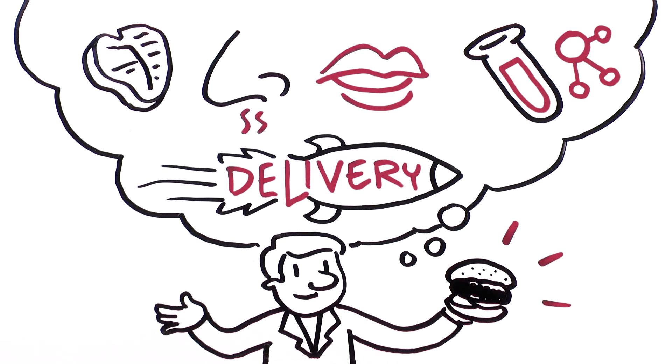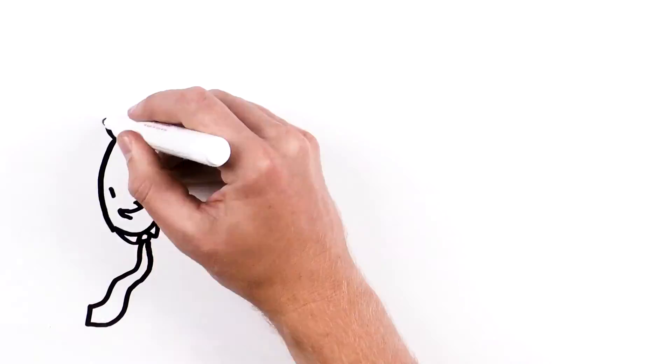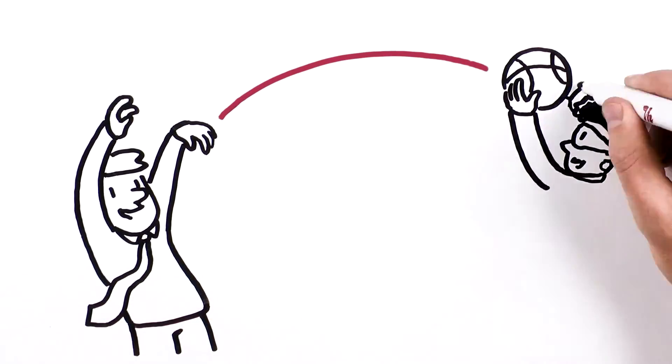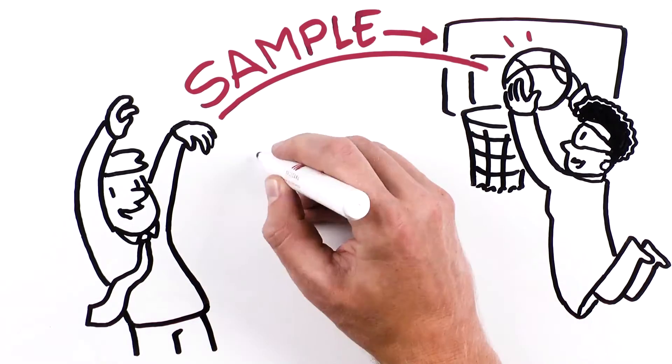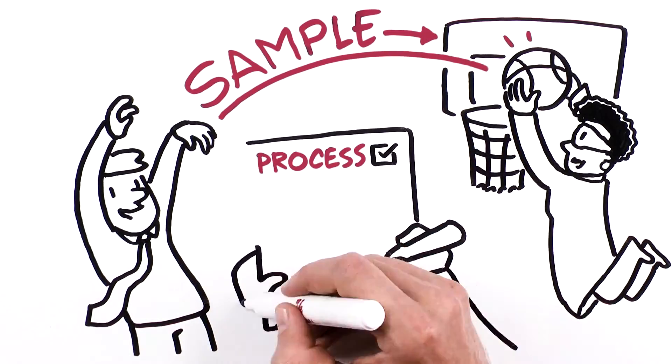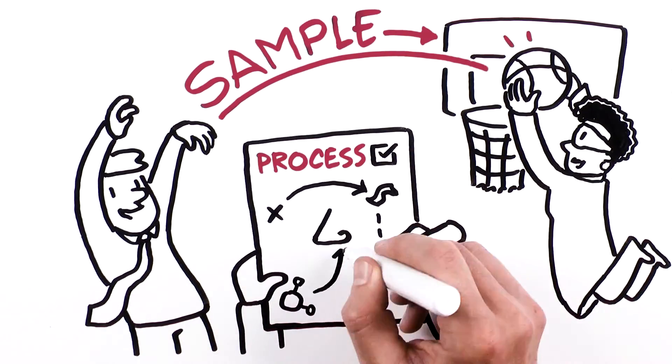But that doesn't mean you can't help them out. Assist our team and reduce turnaround time by providing a flavor sample up front. This helps move the process along and provides more accurate analysis of your flavor fundamentals.